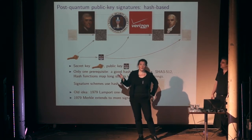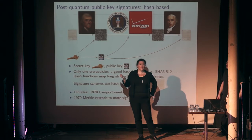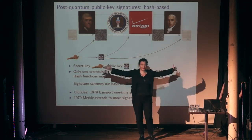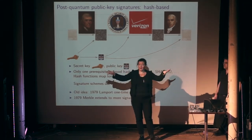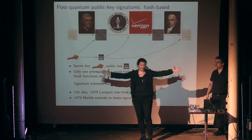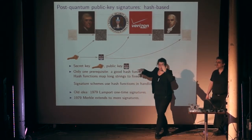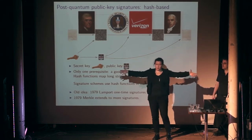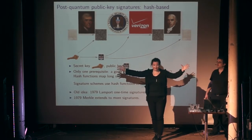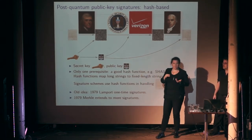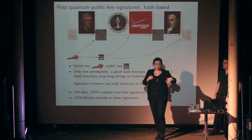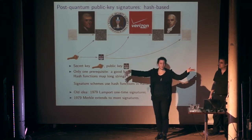For signatures, we have something conceptually obviously secure against quantum computers: hash functions. A hash function takes a long string and maps it to something short in a way you can't invert. If the long string is your secret and the short string is your public key, anyone can verify the operation. This was Lamport's idea in the 1970s — but it's a one-time signature. Once you reveal the pre-image, you've used that signature and must throw it away.